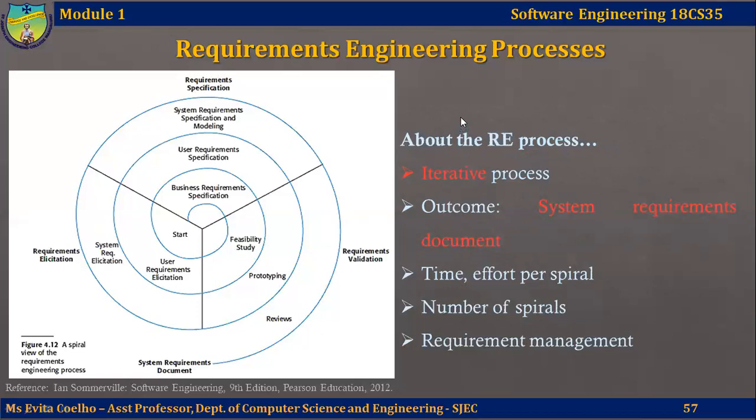Agile requirements engineering is a process where you accommodate changing requirements from the customer — it is more realistic. Customers, when they first come to the developer, will often not know exactly what they want from the system, as they may not be technical people. All the requirements may not be specified in the first interaction. Many changes to the requirements may come only when a software increment or prototype has been given to the customer, who then works with it and requests more changes, modifications, new technology upgrades, and so on. Agile software development is a process which allows you to accommodate these changing requirements.